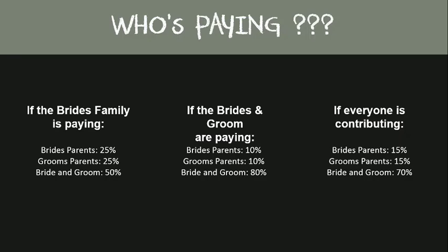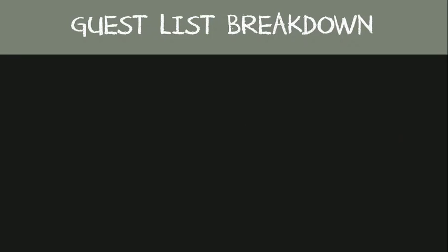If the bride and groom are paying for the wedding, then they would give a small percentage of invites to their parents. But if everyone is contributing, then the parents would get a higher percentage of invites, and if anyone wanted to invite more guests, they would pay for those extra guests. This method can be used by all three parties to narrow down their own individual lists, or if you're paying for your own wedding, it can help you manage a larger list with ease.